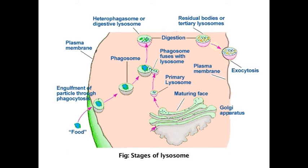Heterophagosomes or digestive vacuoles or secondary lysosomes: when food-containing vacuoles or fluid-containing vesicles formed by phagocytosis and pinocytosis respectively fuse with lysosomes which contain hydrolytic or digestive enzymes, secondary lysosomes are formed. The food particles are digested by hydrolytic enzymes inside the secondary lysosome, leading to the production of low molecular weight products which pass through the lysosomal membrane and are incorporated into the cell for use in metabolic pathways.